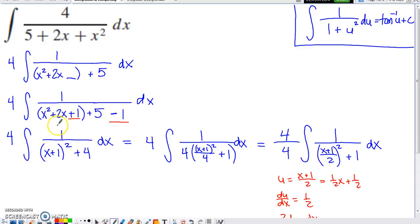And then on this next line, what I realized was, well, these were obviously like terms, the plus 5 and the minus 1 combine to a positive 4.